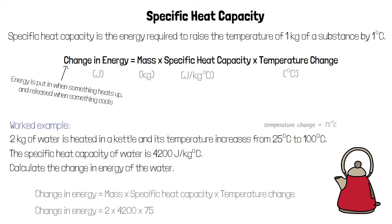If we substitute our values from the question, change in energy is equal to 2 times 4200 times 75, which is 630,000 joules.